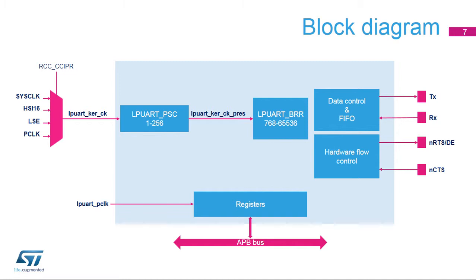Additional clock sources include the low-speed external oscillator, or LSE. The LPUART clock source is divided by a programmable factor in the LPUART PSC register, in the range 1 to 256.